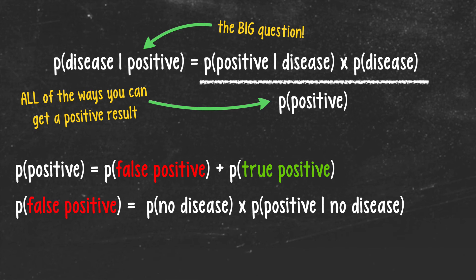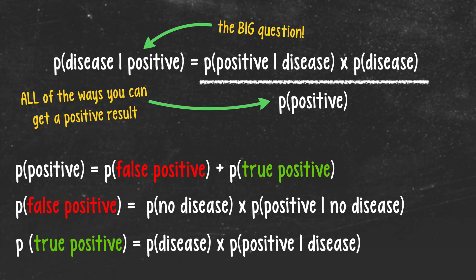To get a false positive result, you obviously need to have no disease and get a positive result despite having no disease. So this term is just the product of these two probabilities. Similarly, for true positives, you need to actually have the disease and get a positive result.